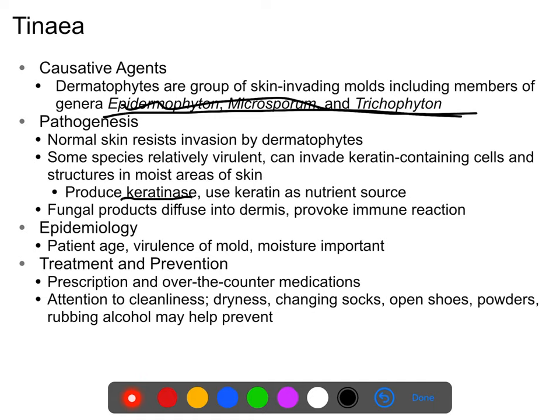The fungus diffuses into the dermis, provoking an immune response — hence the typical rash. It can spread from person to person, usually by direct contact or by fomites, such as sharing footwear. The patient's age, the moisture of the area, and the virulence of the organism are the most important determinants of how severe a case you get.